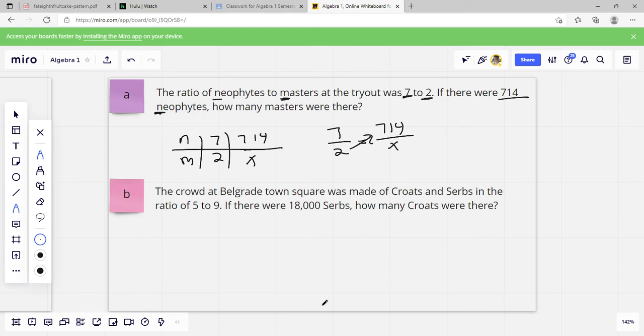Then we multiply here. So 2 times 714. 2 times 4 is 8. 2 times 1 is 2. 2 times 7 is 14. And then we would have 1428 equals, multiply here, 7 times X would be 7X. And then we just divide by 7 on both sides. So 1428 divided by 7. 7 times 4 is 204. So the answer to this one is 204.